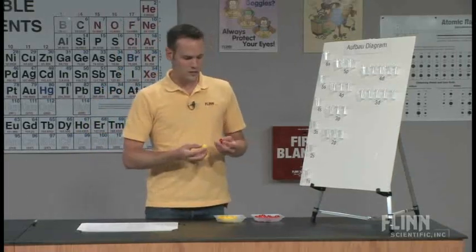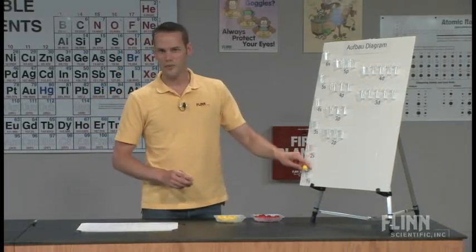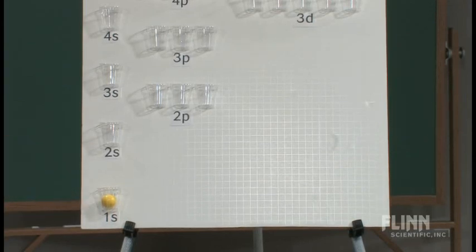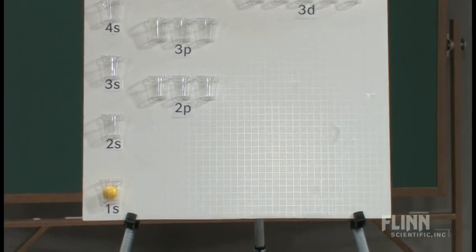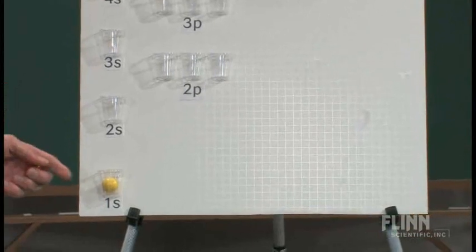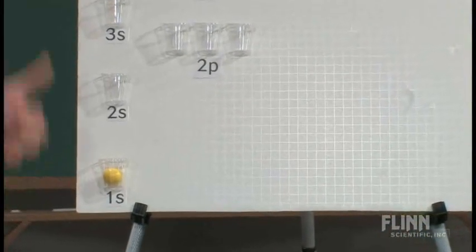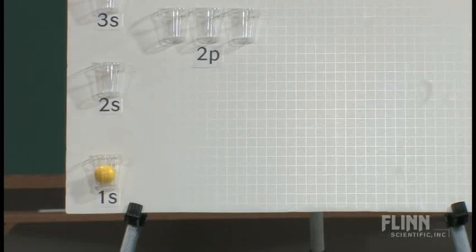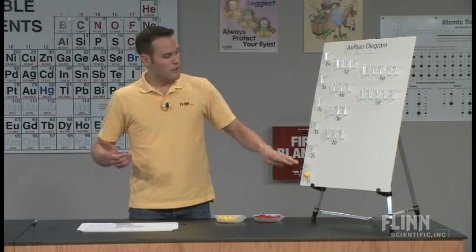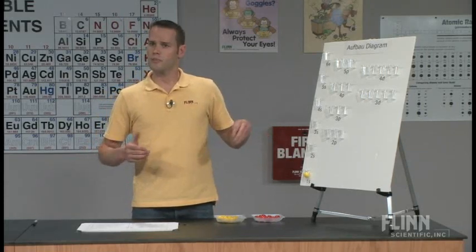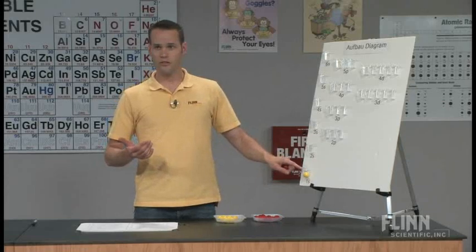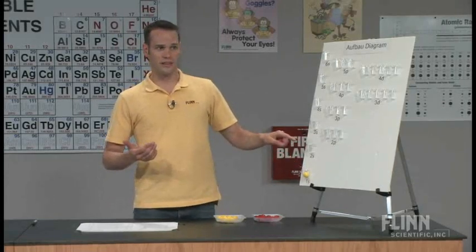I have students pick an element from the first two rows of the periodic table. For example, hydrogen has only one electron in the 1s orbital. By default, I tell them to put it in the up spin position. The important rule I always make them remember is that we have to completely fill an orbital before jumping to the next energy level.